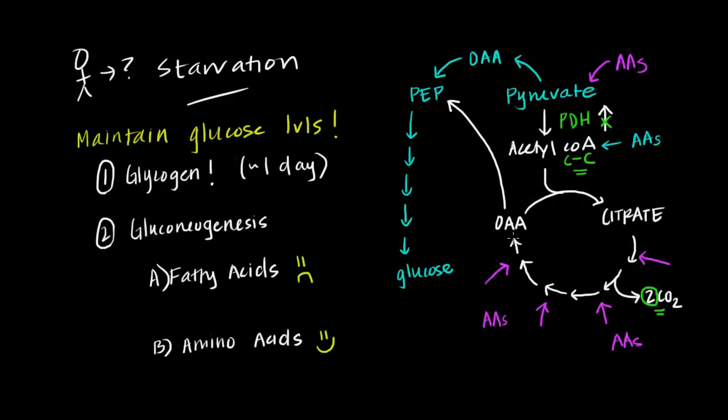As long as those amino acids don't have any way to contribute to any of these intermediates in the Krebs cycle, it's just like the situation for fatty acids. Because we're ultimately turning into acetyl-CoA, there's no way for acetyl-CoA to contribute to this pathway of gluconeogenesis. So these amino acids, if they're exclusively being turned into acetyl-CoA, cannot contribute to gluconeogenesis.